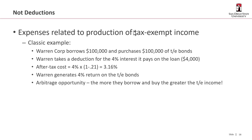Then we talked about things we have to capitalize as opposed to deduct. Another thing that is non-deductible is when you incur expenses that are related to the production of tax-exempt income. When you think about it, that makes sense — if I'm allowing you to exempt the income from taxation, then why would I allow you to deduct the expenses associated with that?